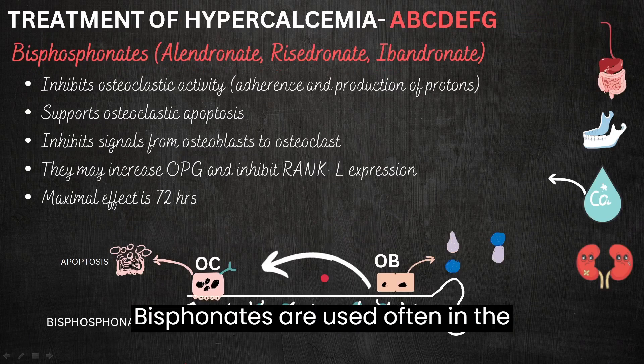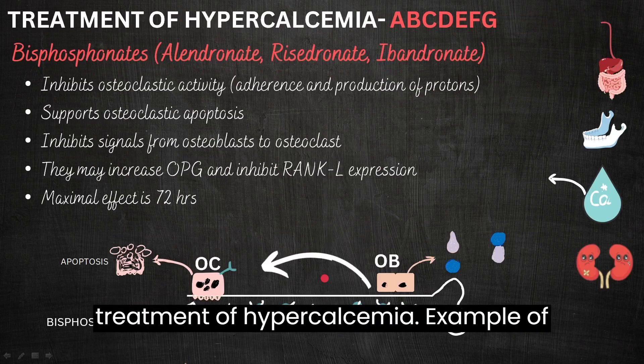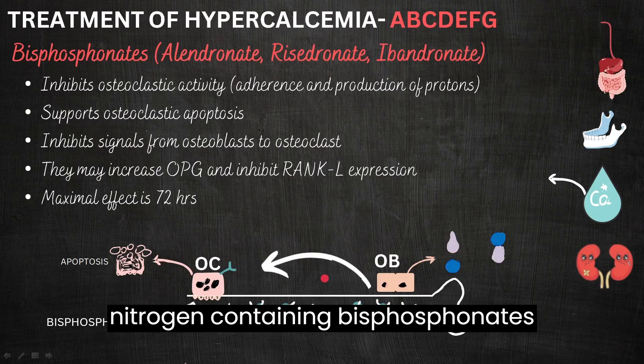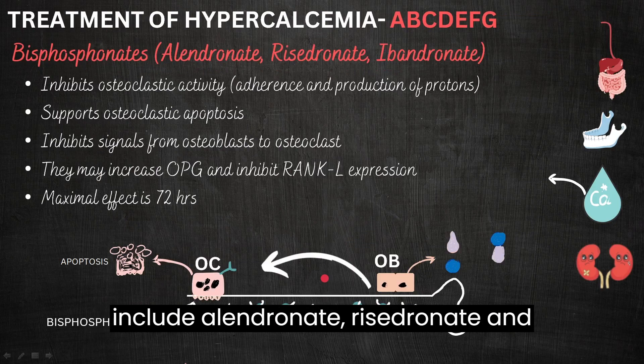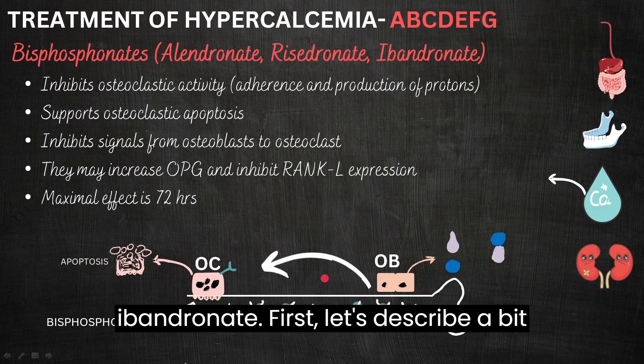Bisphosphonates are used often in the treatment of hypercalcemia. Examples of nitrogen-containing bisphosphonates include alendronate, risedronate, and ibandronate.